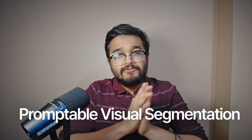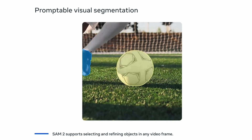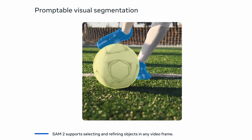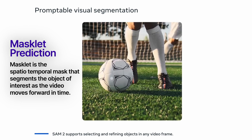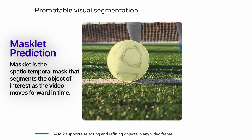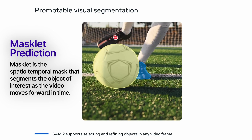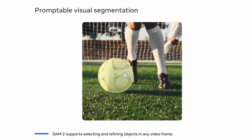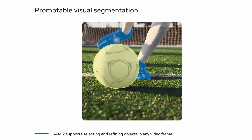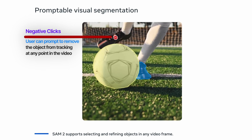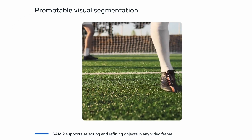SAM2 focuses on the PVS, or Promptable Visual Segmentation task. Given an input video and a user prompt like point clicks, boxes, or dense masks, the network must predict a masklet, which is a spatiotemporal mask. It's spatial because the network must learn the space the queried object covers at each individual frame, and temporal because the mask changes as time progresses. Masklets can be iteratively refined by providing more prompts through positive or negative clicks.